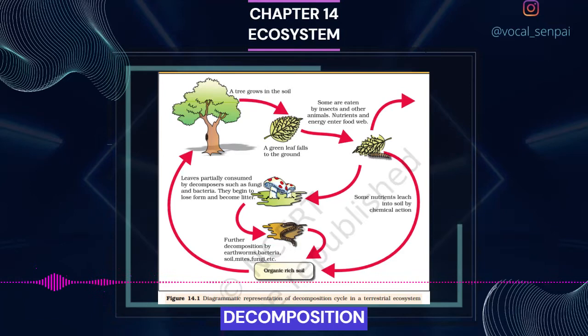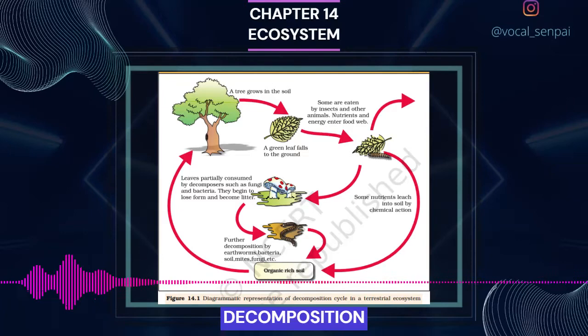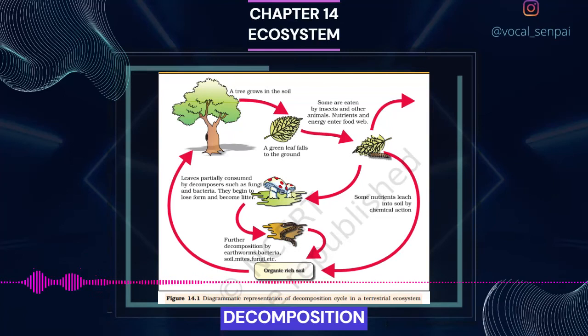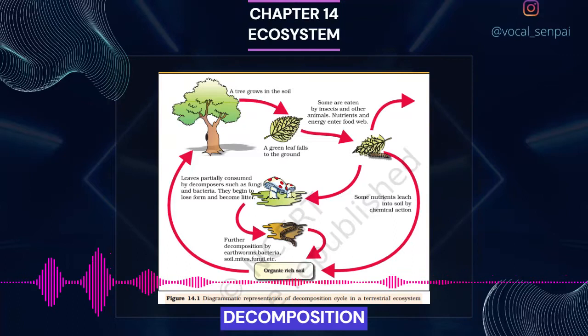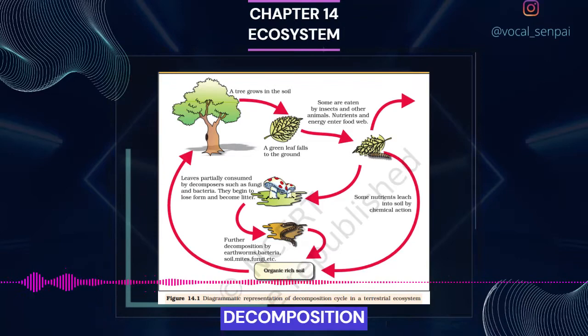The important steps in the process of decomposition are fragmentation, leaching, catabolism, humification and mineralization. Detritivores, for example earthworm, break down detritus into smaller particles. This process is called fragmentation. By the process of leaching, water-soluble inorganic nutrients go down into the soil horizon and get precipitated as unavailable salts. Bacterial and fungal enzymes degrade detritus into simpler inorganic substances. This process is called catabolism. It is important to note that all the above steps in decomposition operate simultaneously on the detritus.